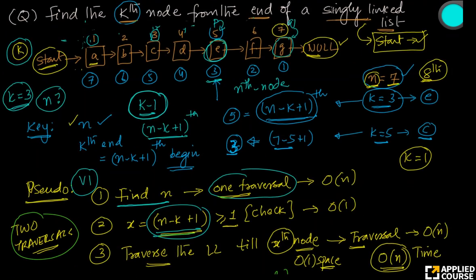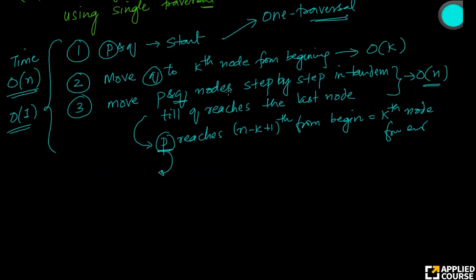Many nice linked list problems can be solved using two pointers and innovative solutions like this. In the next video, we will see the code snippet line by line to understand how everything works together. What we have seen right now is pseudocode. My suggestion is to always write pseudocode first, because then converting it into actual code becomes easy.